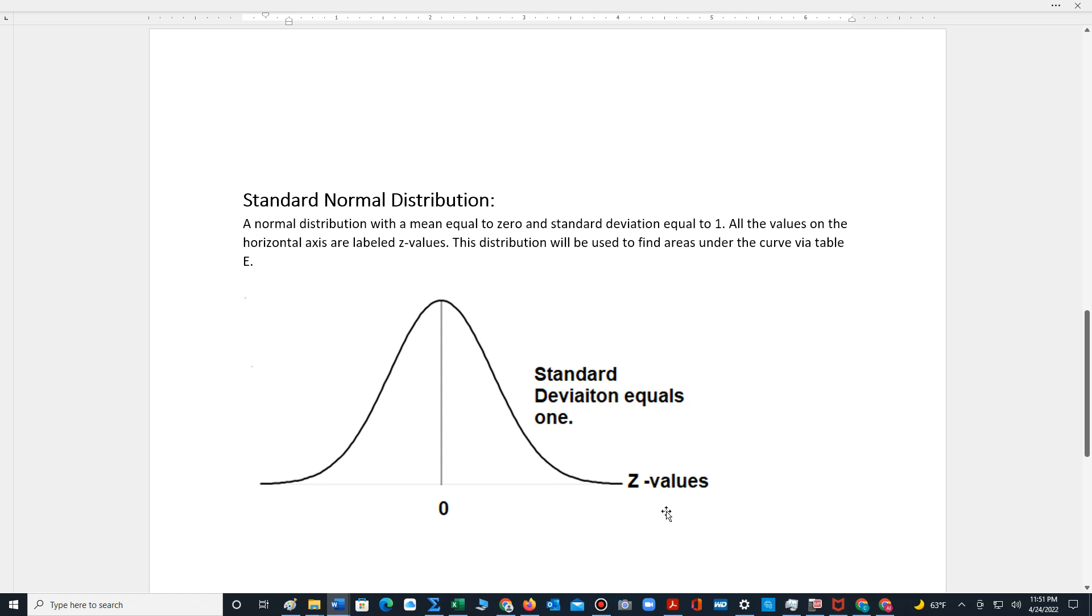This version is called the standard normal distribution. It's a normal distribution with a mean equal to zero and a standard deviation equal to one.